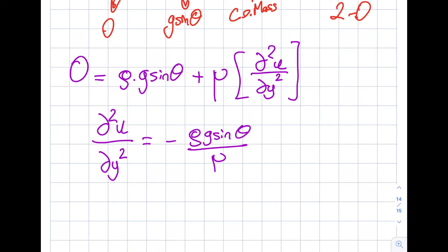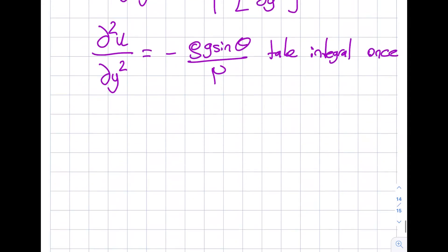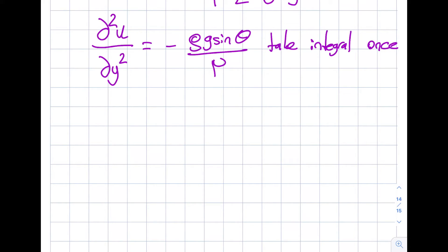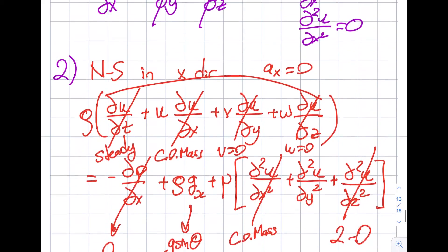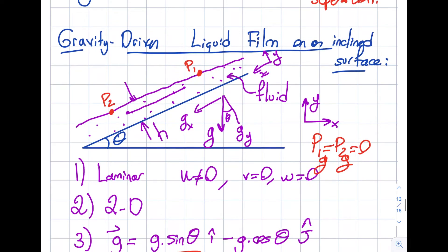And then just like I did in the previous segments, take integral once. And then integral of del square u del y square is del u del y. I'm going back in the direction. It's going to be minus rho g sine theta divided by viscosity times y plus a constant of c1. Why did I get a constant of c1, not f of x, z?